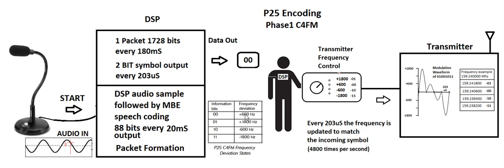For instance, if the frequency is plus 600, it's going to represent two zeros. If it's plus 1800, it's going to represent 01. So over here on our diagram, when we're plus 1800 off the carrier frequency — which in my example of 159.24 MHz would be 159.2418 — that 18 up here would represent 01. They're using this encoding process to transfer the packets of data across.